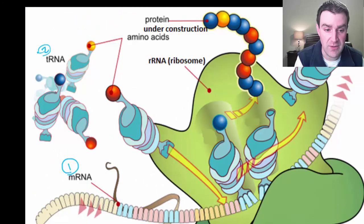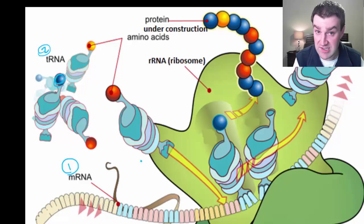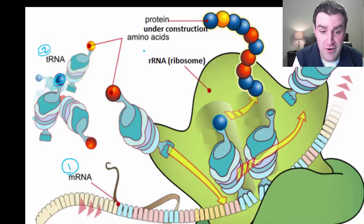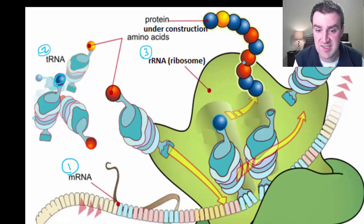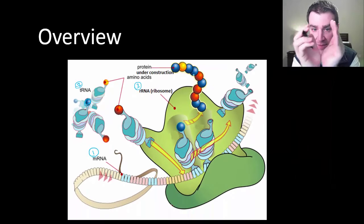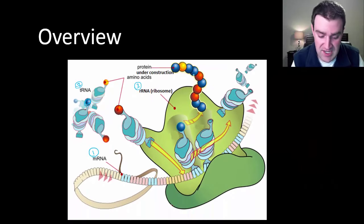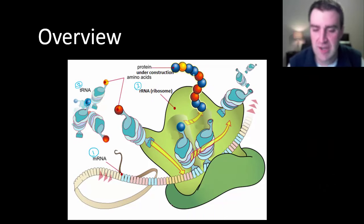The T stands for transfer RNA. Transfer RNAs each carry one amino acid and their goal is to bring it to the right place through a mechanism that we'll see. The third RNA is rRNA, or ribosomal RNA — that's the RNA in the actual ribosome that puts the amino acids together to make something that will eventually fold up and become a protein when it has its right final shape.